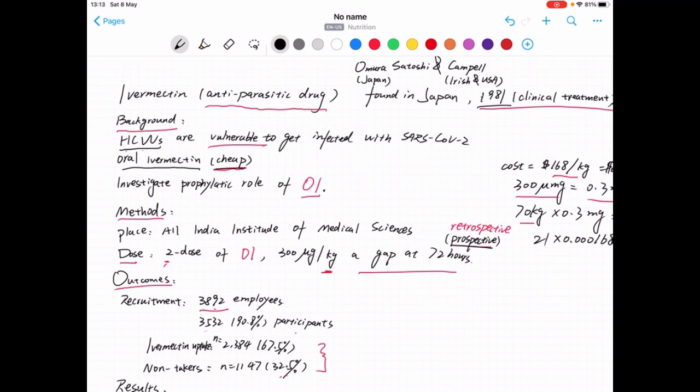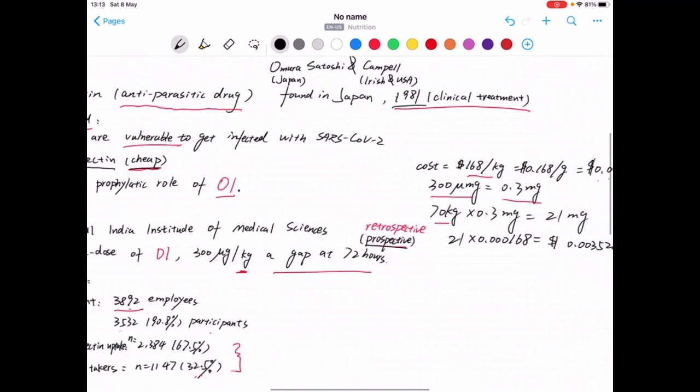And retrospective means from now to the previous period. So the study, according to the statistics, was conducted last year in 2020 and ended in December.